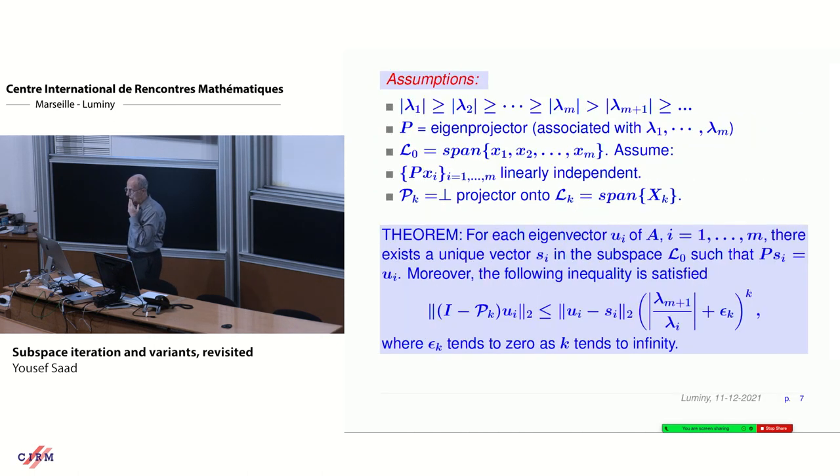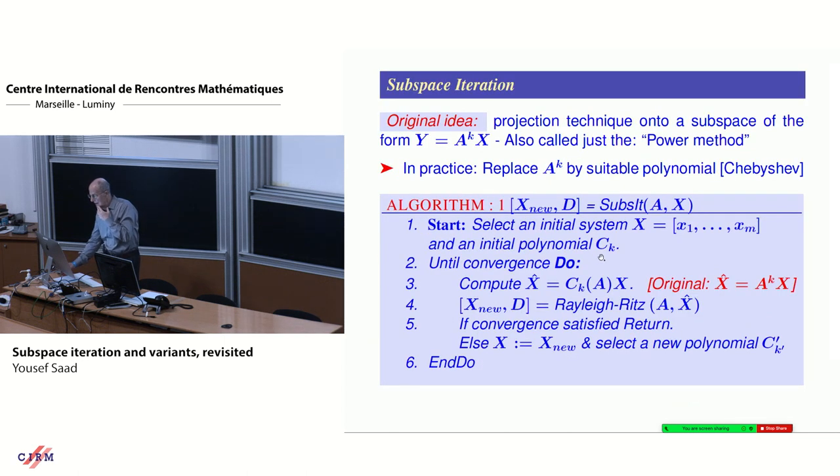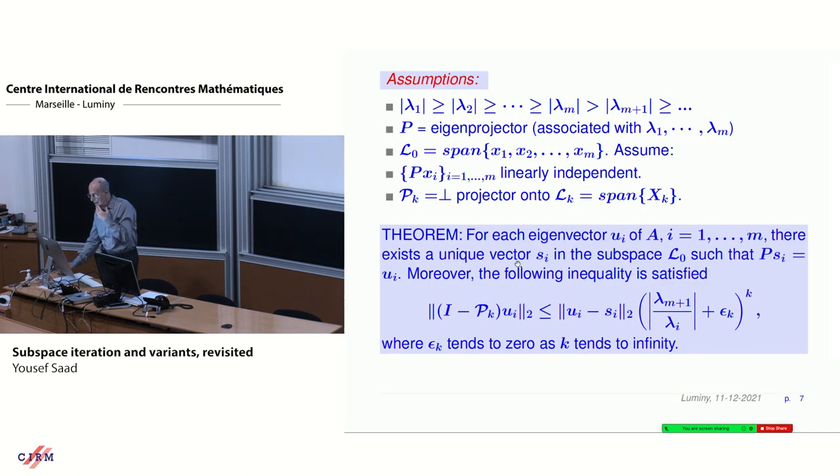Let's go now to some theory. There is a result I'll just go through very quickly. If UI is the eigenvalues sorted this way, and you have M that are separated from the others, and you call pk the orthogonal projector on this Lk, the distance from UI to that subspace is bounded from above by some initial error times this ratio plus epsilon k to the power k, where epsilon goes to zero.